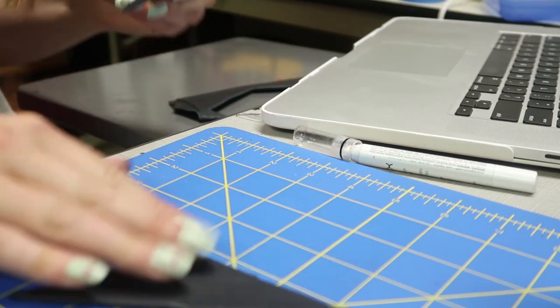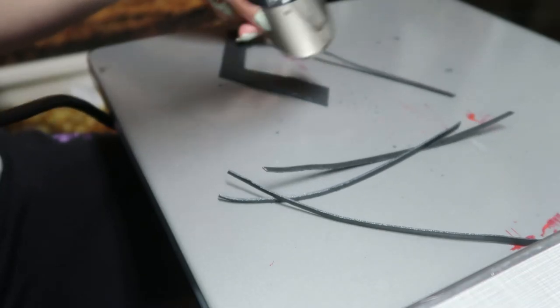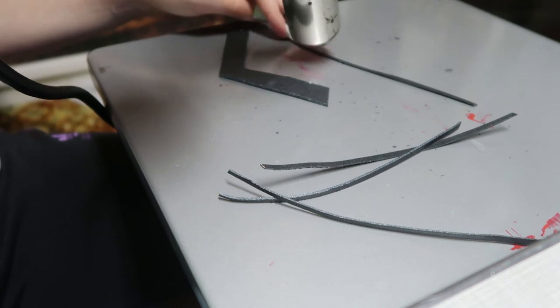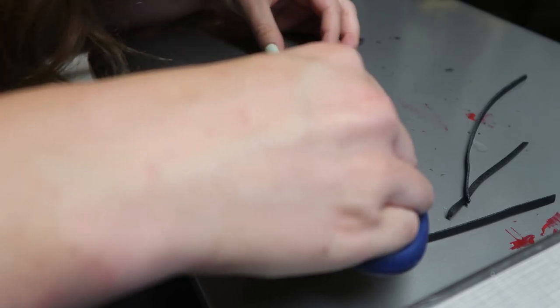Next I used this small rotary mat to cut out strips of Worbla that are one eighth of an inch wide. Then I heated up the Worbla and laid the little strips onto the edges of the crown. Since Worbla is a thermoplastic, it sticks to itself when you heat it up.